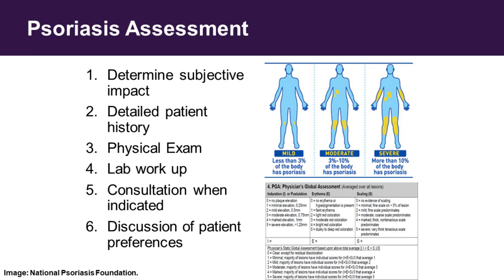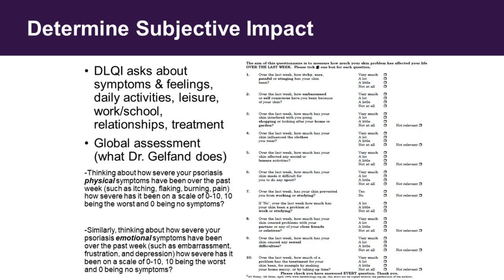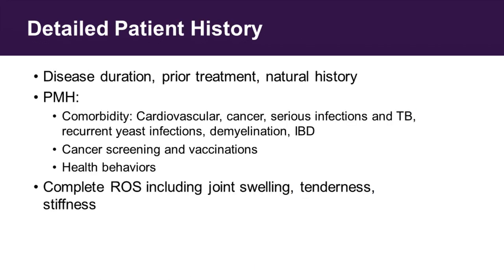A thorough assessment involves understanding the patient's subjective experience with their disease, a detailed patient history, a physical exam, trying to document both the body surface area involved and locations involved. I like to do a global assessment because that helps me follow the patient over time and figure out how my treatment is working. These are chronic diseases where you can look back ten years and say, when I first met you, you had disease on 50% of your body with a PGA of four — look how good we're doing now. When taking history, I want to know how long they've had it, what their prior treatment has been and their response, because we have so many therapies now that will dictate what I'm going to do next, their natural history, what makes the disease better, what makes it worse.